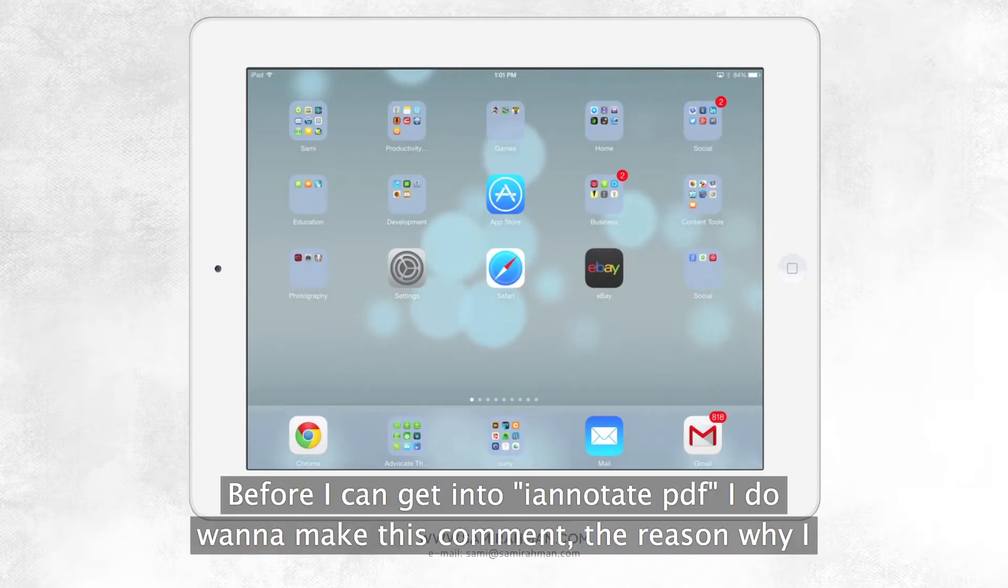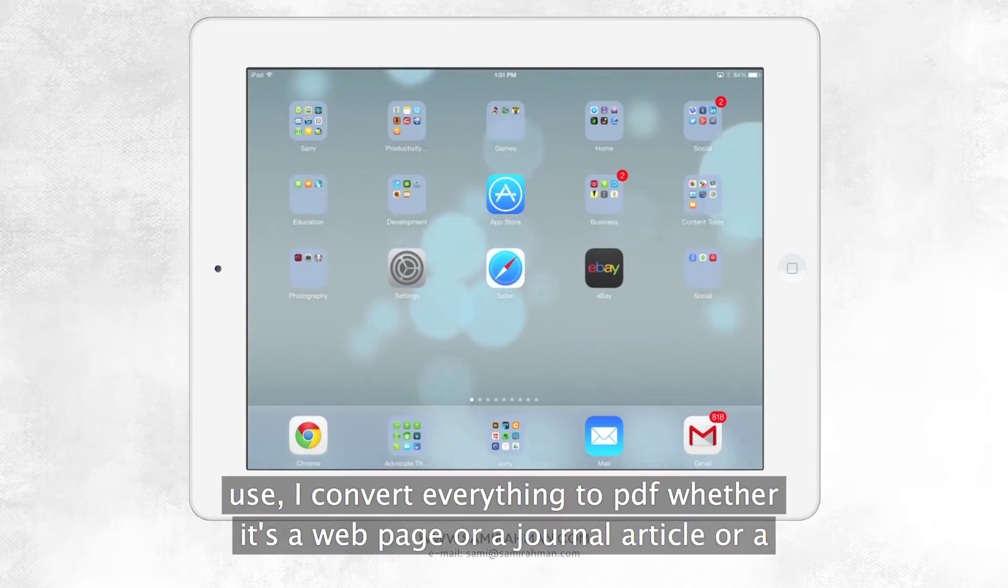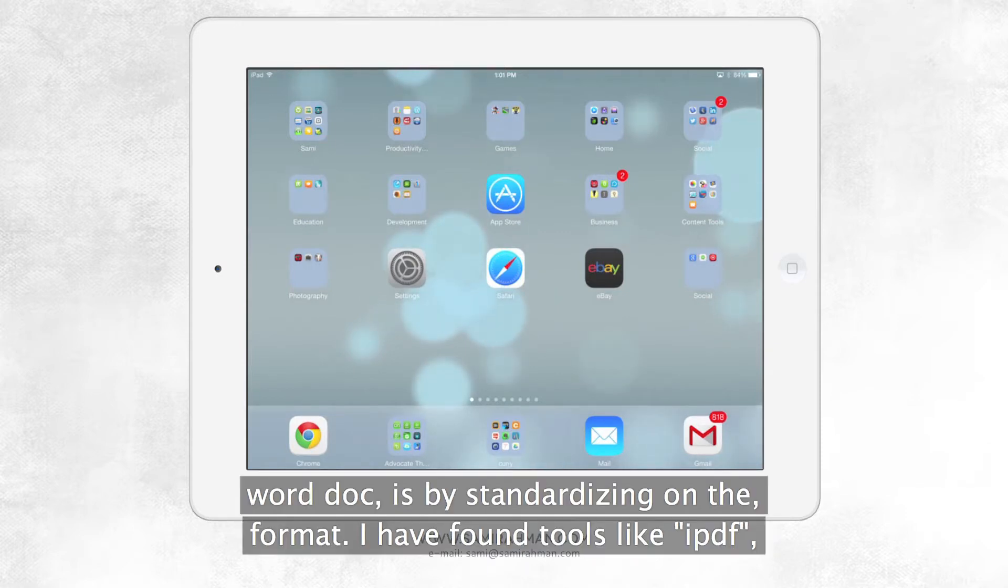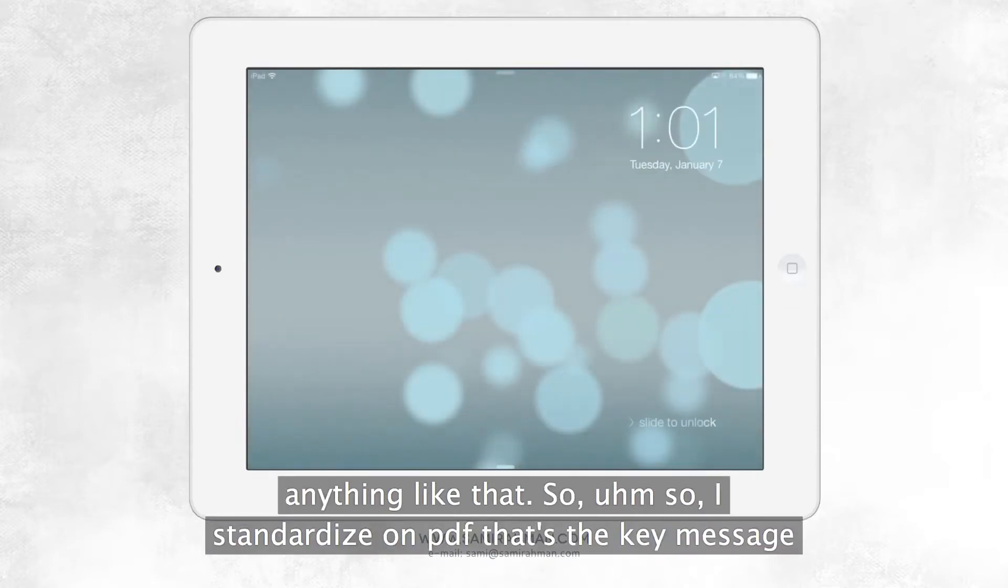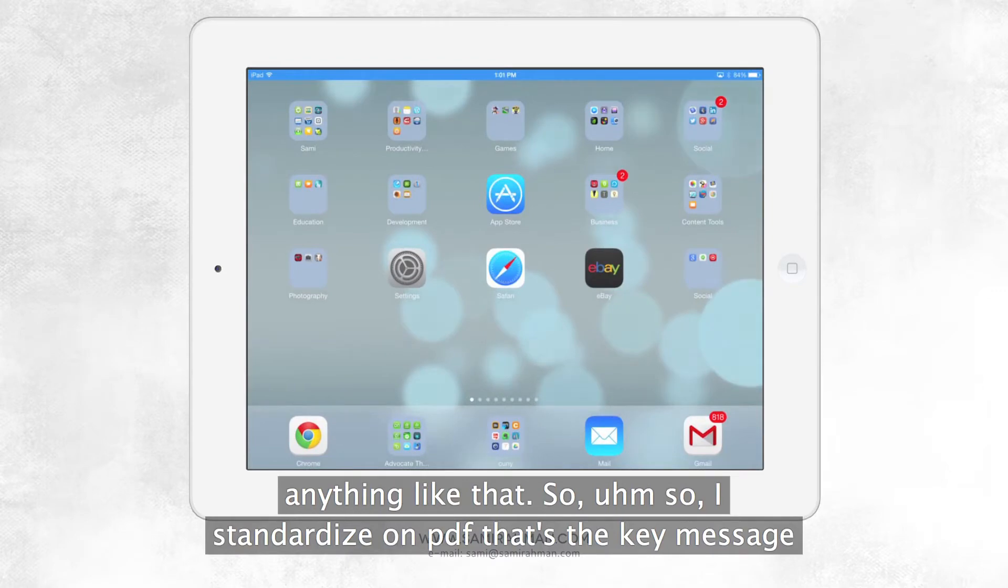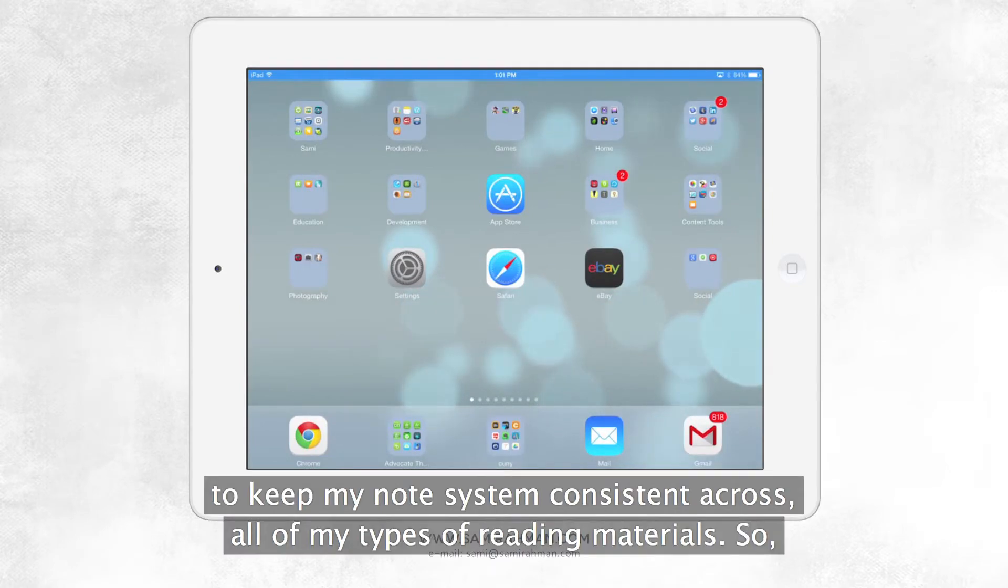Before I can get into iAnnotate PDF, I do want to make this comment. The reason why I convert everything to PDF, whether it's a web page, a journal article, or a Word doc, is by standardizing on the format. I have found tools like iAnnotate PDF to be able to annotate, meaning make notes on it, to be far more effective than if I tried to create the same kind of note in a web page or on a journal article. So I standardized on PDF. That's the key message to keep my note system consistent across all of my types of reading materials.